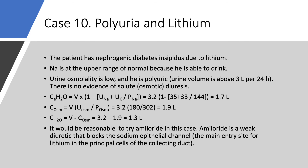This patient has nephrogenic diabetes insipidus due to lithium — the most common drug that causes nephrogenic DI. Sodium is at the upper range of normal because he's able to drink. If you cut off his water access, sodium will start to rise. Urine osmolality is low, as expected with nephrogenic DI. He is polyuric with urine volume above three liters.